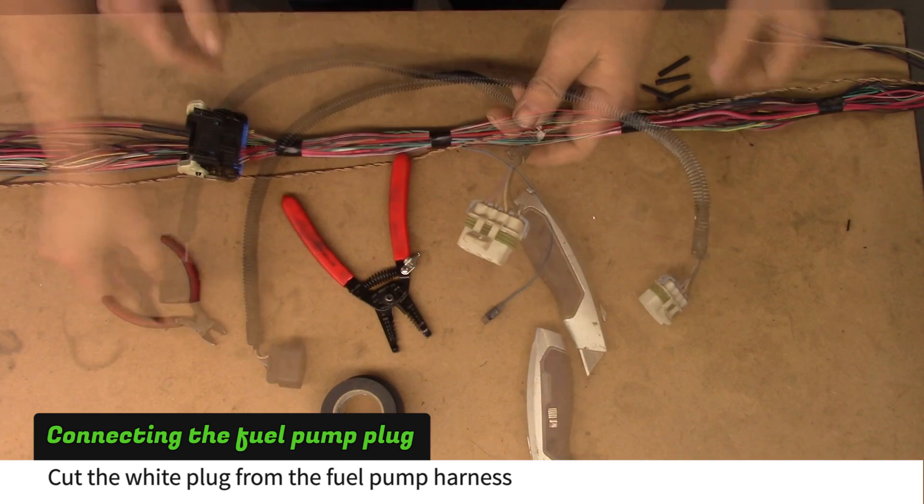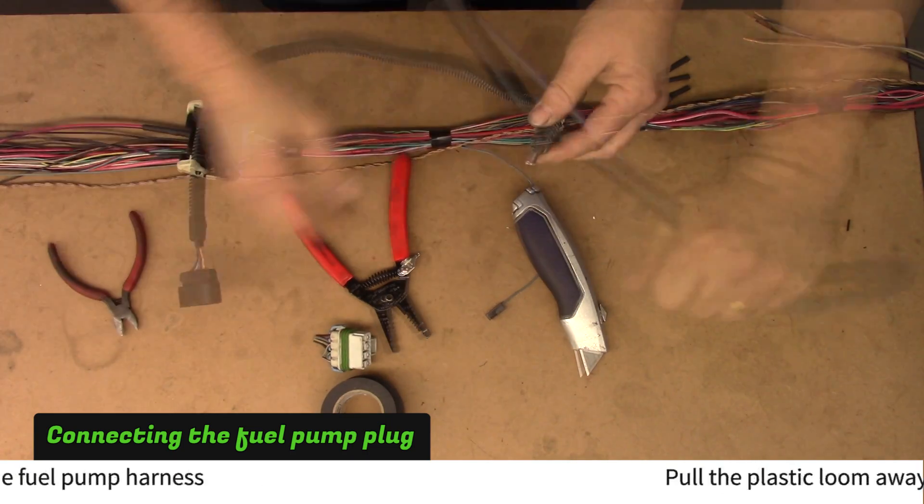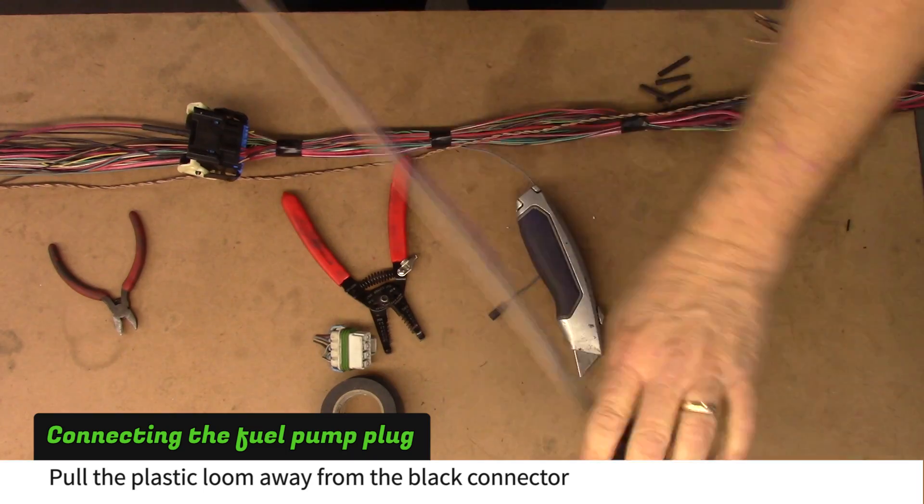Cut the white plug from the fuel pump harness. If your donor was a lower emission vehicle, you won't have this harness. Go to our website to see how to handle this.